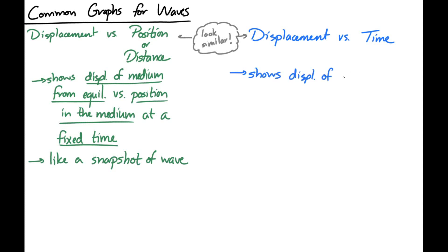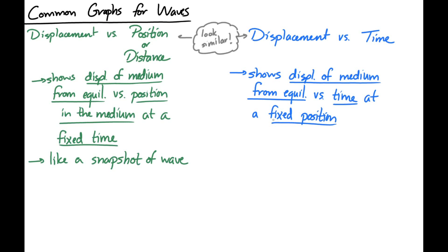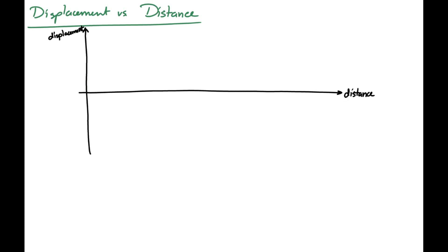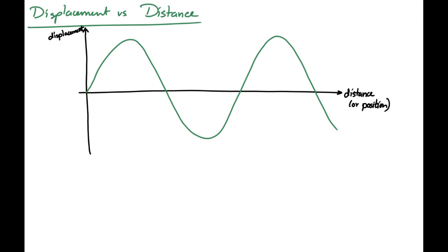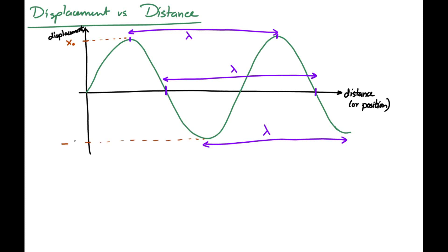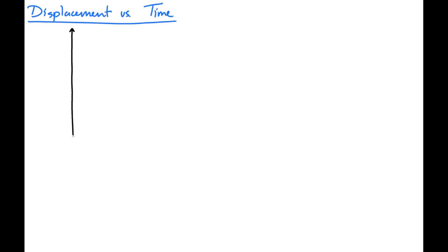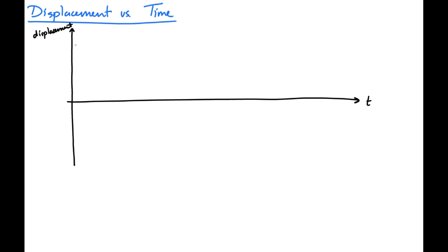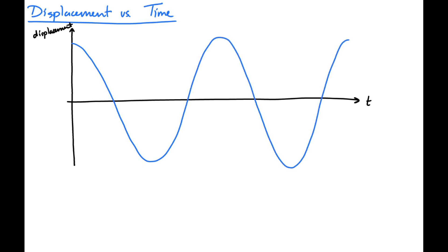The displacement versus time graph shows the displacement of the medium from equilibrium at one fixed location in the medium over time. In the displacement versus distance graph, the distance between adjacent peaks and troughs gives the wavelength, since the horizontal axis is in meters. In the displacement versus time graph, the distance between adjacent peaks and troughs gives the period, since the horizontal axis is in time.